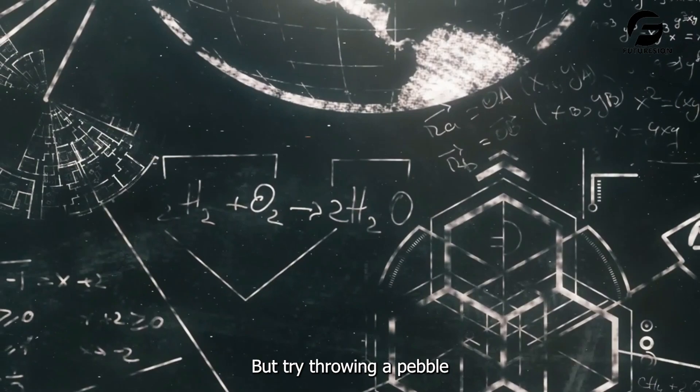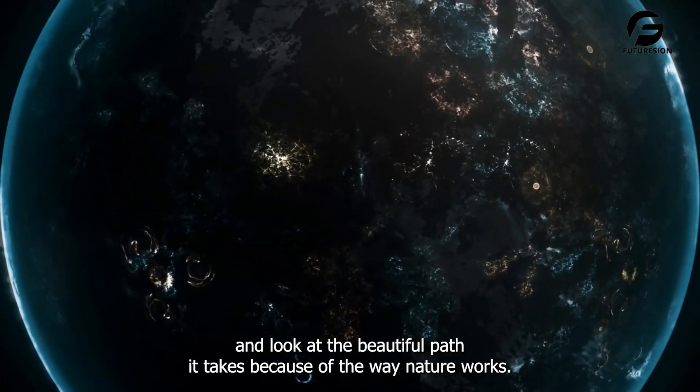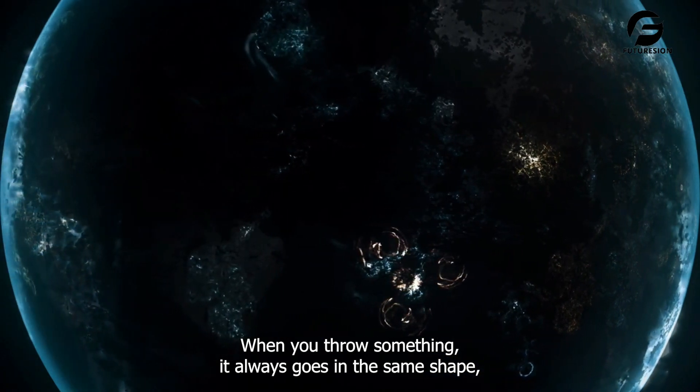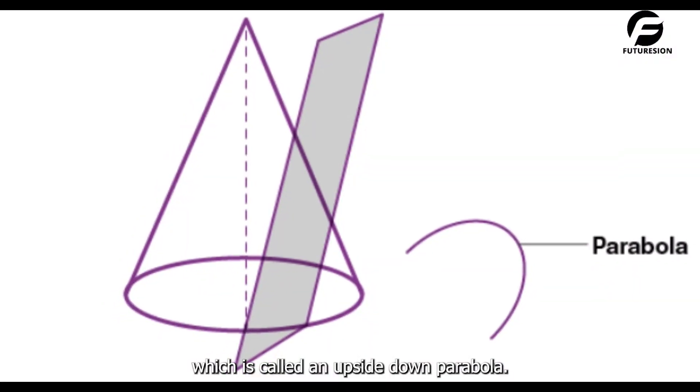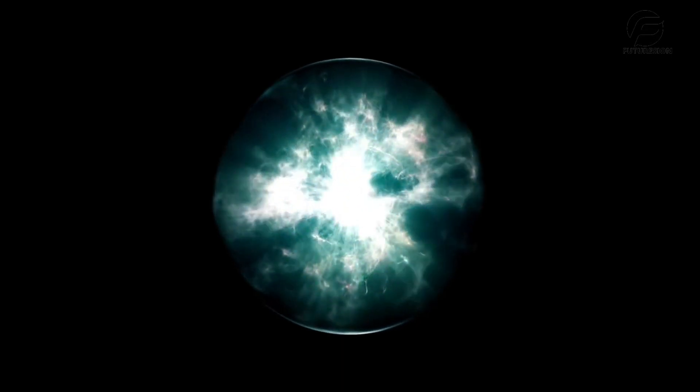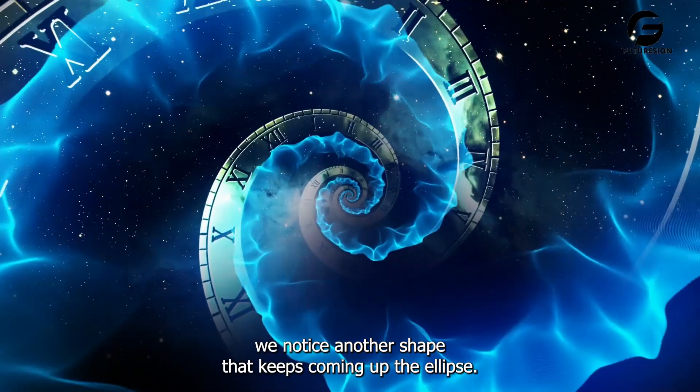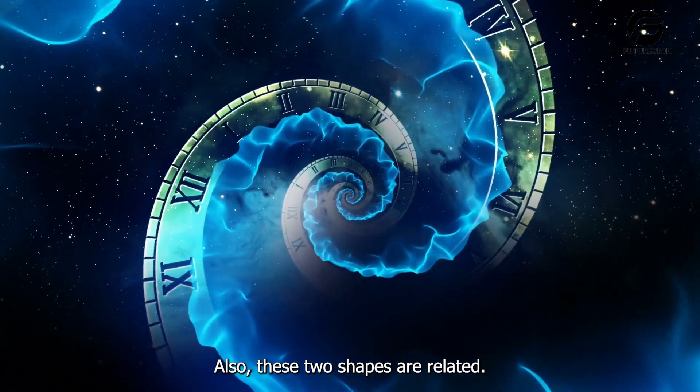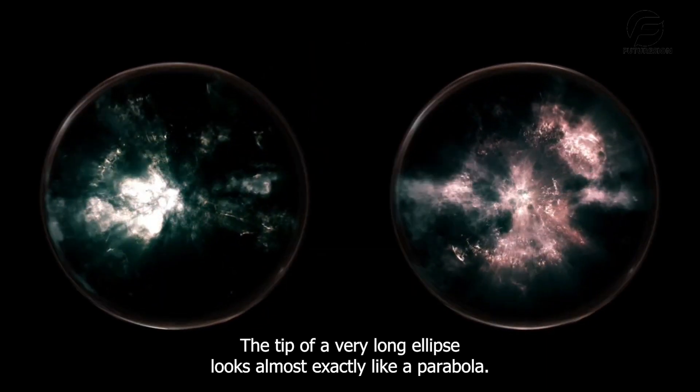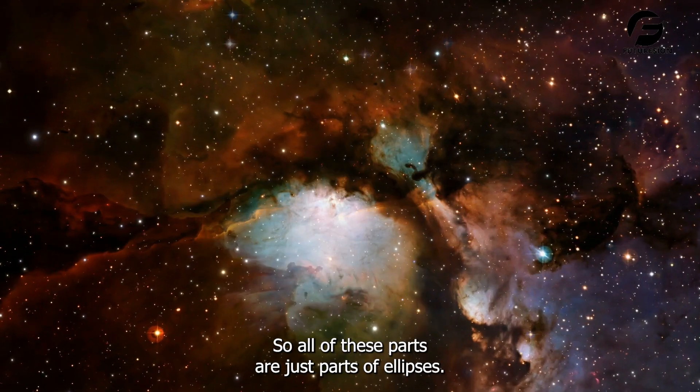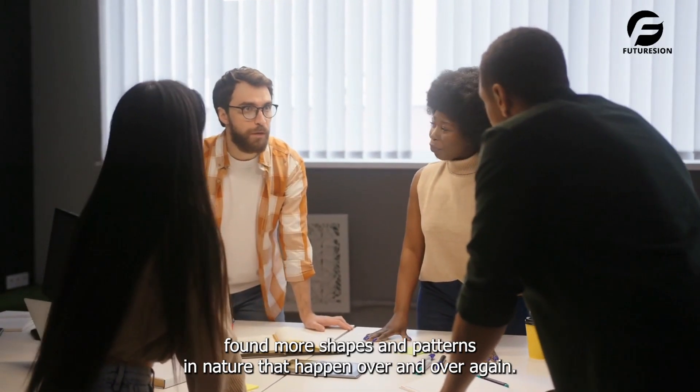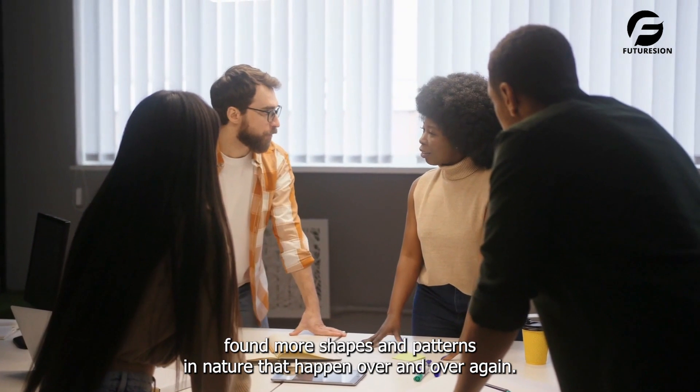But try throwing a pebble and look at the beautiful path it takes because of the way nature works. When you throw something, it always goes in the same shape, which is called an upside-down parabola. When we watch how things move in orbits in space, we notice another shape that keeps coming up, the ellipse. Also, these two shapes are related. The tip of a very long ellipse looks almost exactly like a parabola. So, all of these parts are just parts of ellipses.